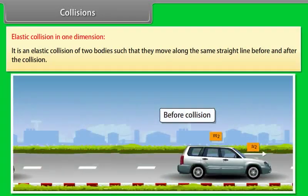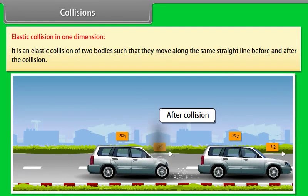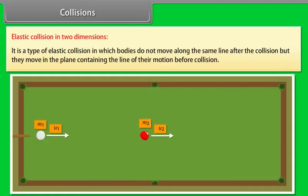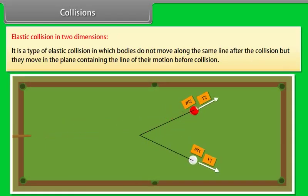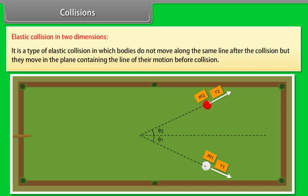It is an elastic collision of two bodies such that they move along the same straight line before and after the collision. It is a type of elastic collision in which bodies do not move along the same line after the collision but they move in the plane containing the line of their motion before collision.